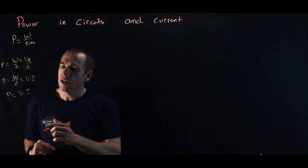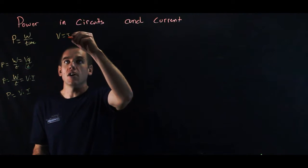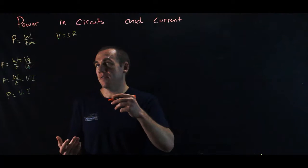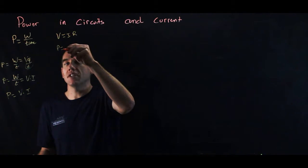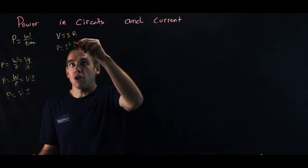So using this together with Ohm's law, V equals IR, we can write that in a couple of different ways. If we just make the first substitution, we can see that power is equal to I squared times R.